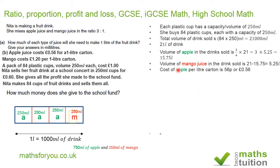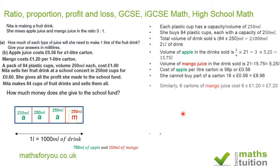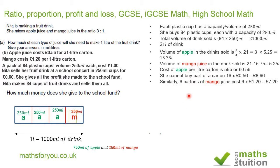Because we require 15.75 litres of apple juice and the juice is sold in cartons, we cannot buy a fraction of a carton. Therefore we require 16 cartons of apple juice. Each carton costs £0.56, so for 16 cartons we pay £8.96. Similarly for mango juice, we need 6 cartons since we cannot buy a fraction of a carton. Each carton costs £1.20, so for 6 cartons we pay £7.20.